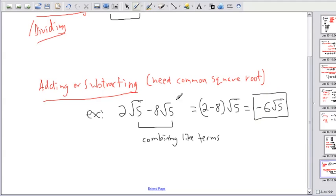In other words, it's going to be minus 6 square root of 5. So this is a little bit more complicated with adding or subtracting. The important thing is to combine the like terms. In other words, they have to have common square roots. So square root of 5, square root of 5, that works.